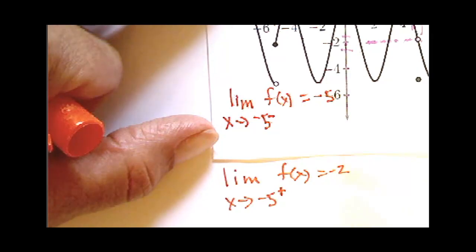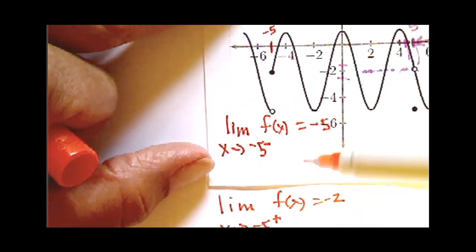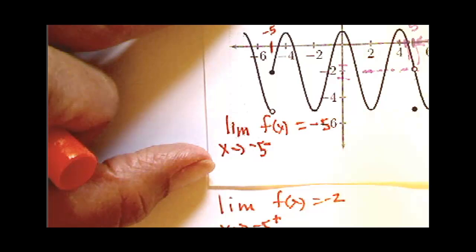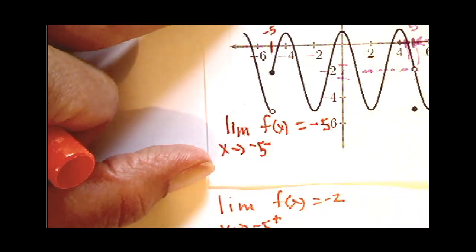Now since these limits don't match, we can't talk about the limit as x approaches negative 5 in general. We can only talk about it in terms of approaching from the left or from the right. As a matter of fact, we have a nice theorem that I will state here.